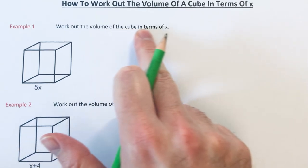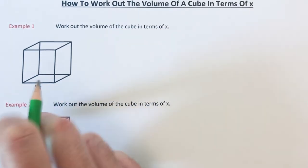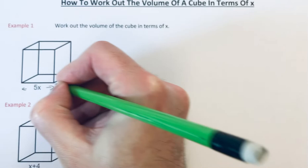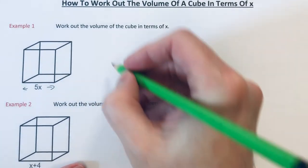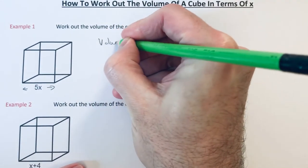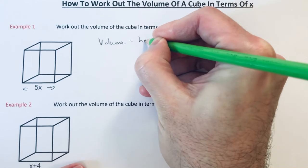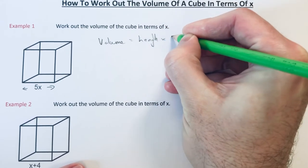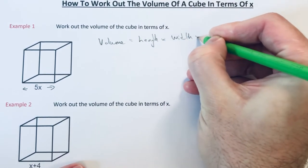We've got to work out the volume of the cube in terms of x. The side length of the box is 5x. So to work out the volume of a box, you multiply the length of the box by its width and by its height.